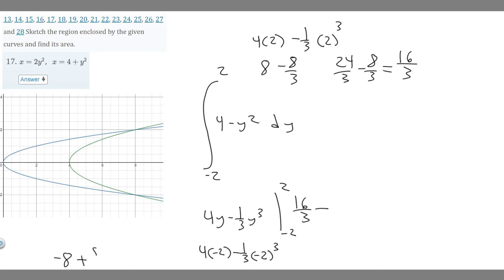Rewriting -8 as -24/3: -24/3 + 8/3 = -16/3. So plugging in -2 gives us -16/3.